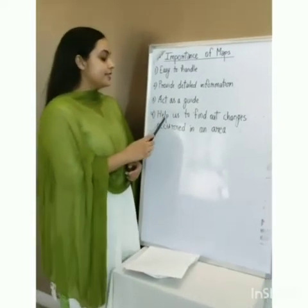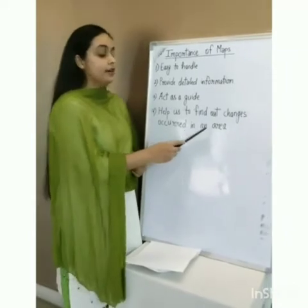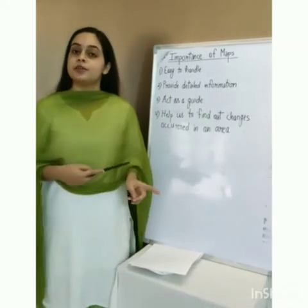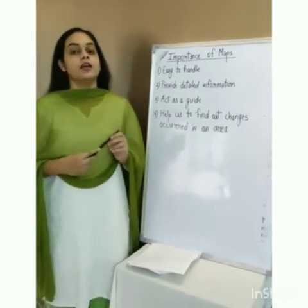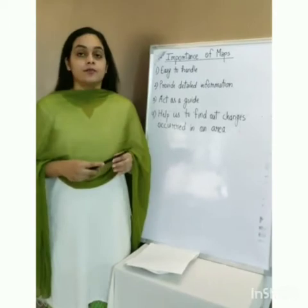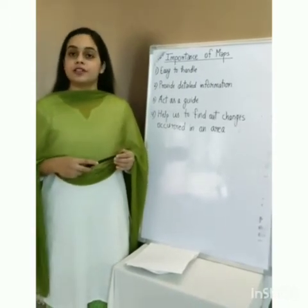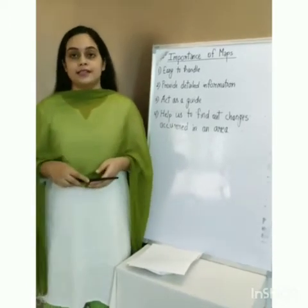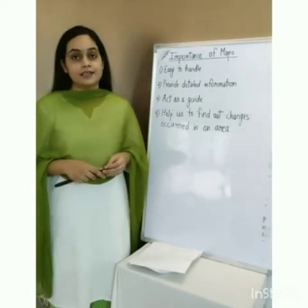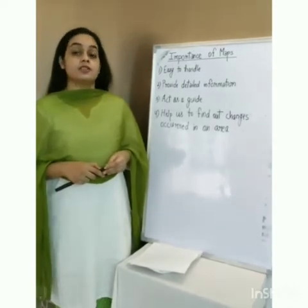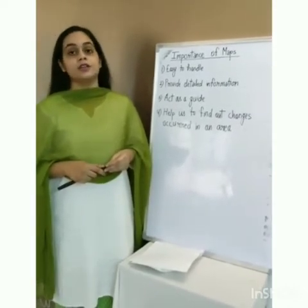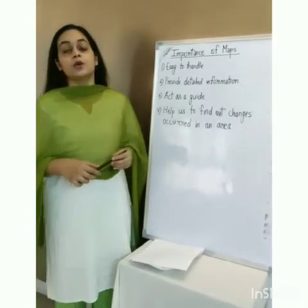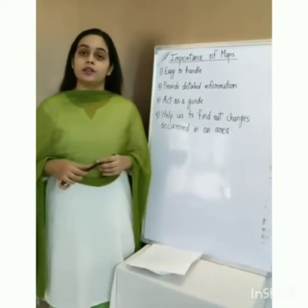The fourth importance is that maps help us find out what changes occurred in an area with the passage of time. For example, take two maps — one prepared in 2001 and one in 2019 — and you will see a lot of differences. Earlier India had 29 states and seven union territories, but now we have 28 states and nine union territories. This shows how maps reflect changes that have occurred in an area over time.